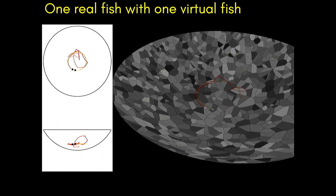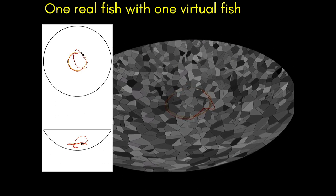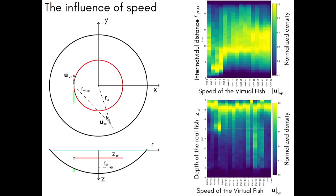Since we can do that, we can now try to map precisely and accurately the parameter space. For example, we use a circular track for different speeds of the virtual fish, putting it at a certain depth so it's visible, and look at what happens when I change the speed. The inter-individual distance — the distance between the real fish and the virtual fish — shows that when the speed is small or comparable to the real fish's speed, they are going to be close together and at the same depth. But as you increase the speed, this interaction disappears.